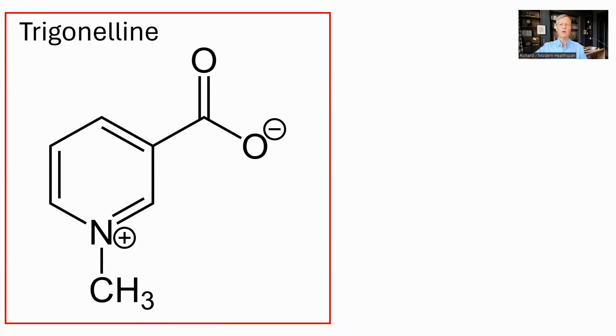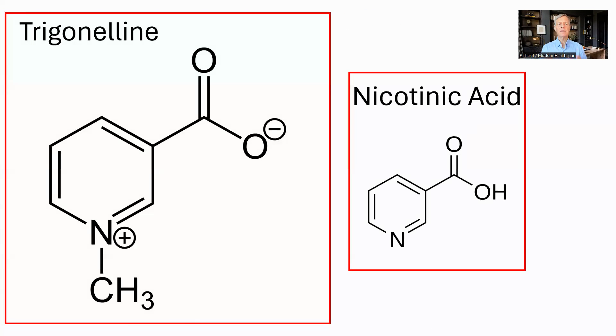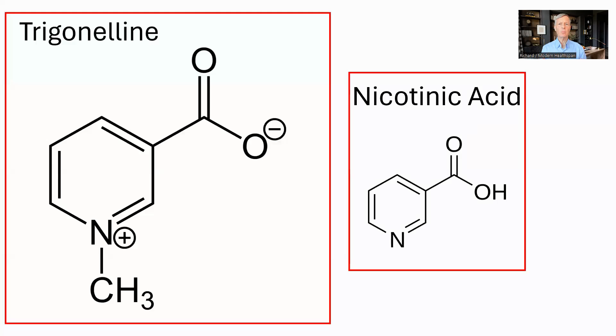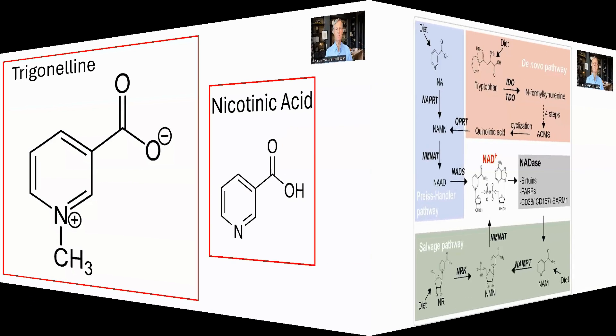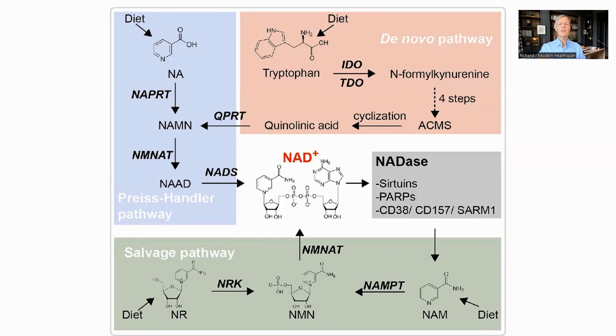Here is the structure of trigonelline. It is a methylated form of nicotinic acid, one of the classic NAD precursors. Trigonelline is an NAD precursor.